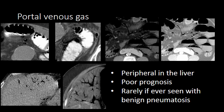When trying to detect portal venous gas or mesenteric venous gas, lung windows will help you see the gas more clearly. Portal venous gas is more peripheral in the liver than the gas associated with pneumobilia, and it is rarely, if ever, seen with benign pneumatosis. Here are multiple examples where you can see gas tracking within the mesenteric veins, outlining the veins, with increased conspicuity when placed on lung windows.